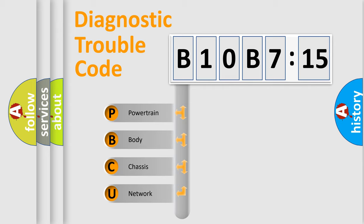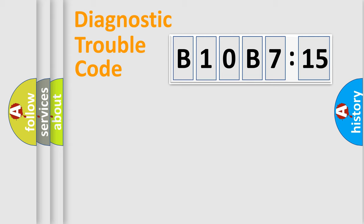We divide the electric system of automobile into four basic units: Powertrain, Body, Chassis, and Network.